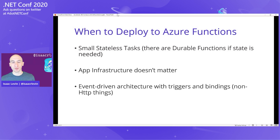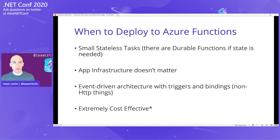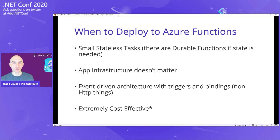Functions live and die by this concept of event-driven architecture, where you have things that trigger your application and things your application is bound to — non-HTTP things, like blobs being dropped in an Azure storage container and a bunch of other different things. One of the best things about Azure Functions is they can be extremely cost effective — I'll put an asterisk there because they can get less inexpensive if you take advantage of scalable workloads like app service environments or app service plans.